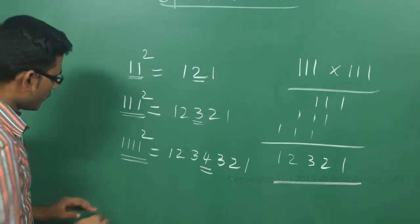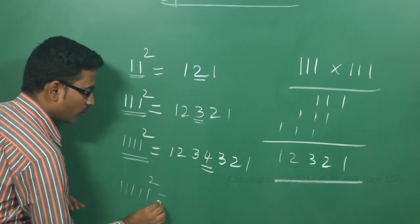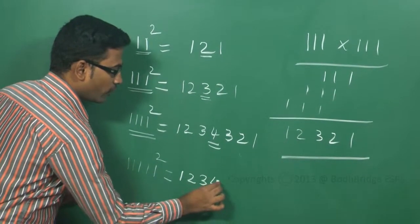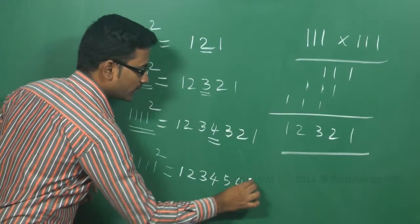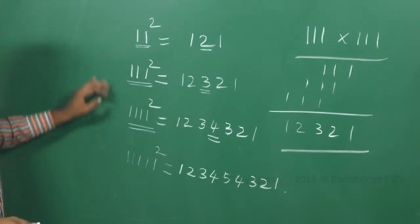This you can derive. If it is 5 ones square is given, now you got the idea, what you can do? 1, 2, 3, 4, 5, 4, 3, 2, 1. This you can do. So this is a simple shortcut.